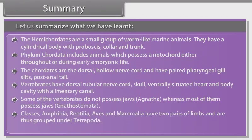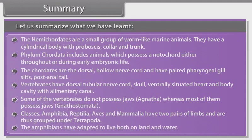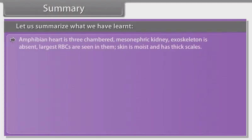Classes Amphibia, Reptilia, Aves and Mammalia have two pairs of limbs and are thus grouped under Tetrapoda. Amphibians have adapted to live both on land and water. Their heart is three-chambered. Mesonephric kidney is present. Exoskeleton is absent. Largest RBCs are seen in them. Skin is moist and has mucous glands.